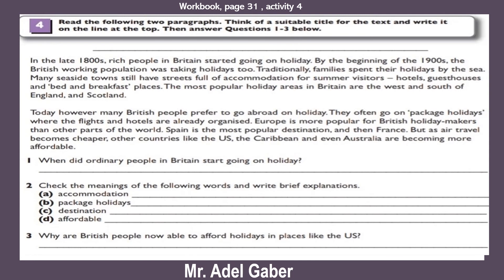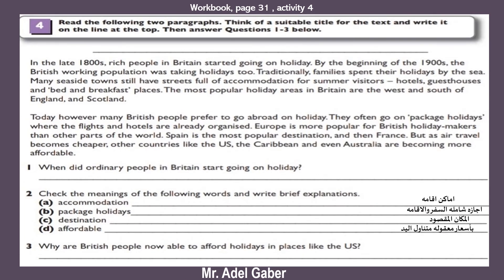Look at your workbook page 31, activity 4. Read the following two paragraphs, think of a suitable title for the text, and write it on the lines at the top. Then answer questions one to three below. Stop this video — you have five minutes to do this task. Have you finished? Okay, check your answers.